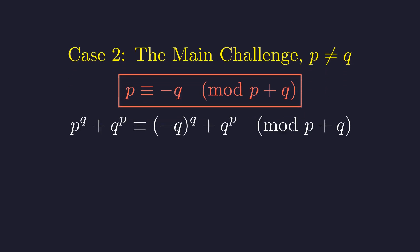We replace p with negative q. For divisibility to hold, this expression must be congruent to 0. The outcome now depends entirely on the parity of the exponents, p and q.